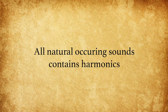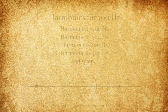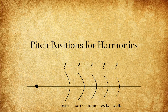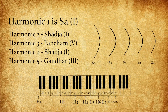Now let's see at what distance the harmonics are. If the biggest one is at 100 Hertz, then the smaller ones would be at 200, 300, 400 and 500 Hertz. This is what happens naturally. What are the notes at these distances of 100, 200, 300, 400 and 500 Hertz in the musical octave? If we take the first harmonic to be the Sa, then the rest of them are the upper Shadja, higher Pancham, still higher Shadja and still higher Gandhar.